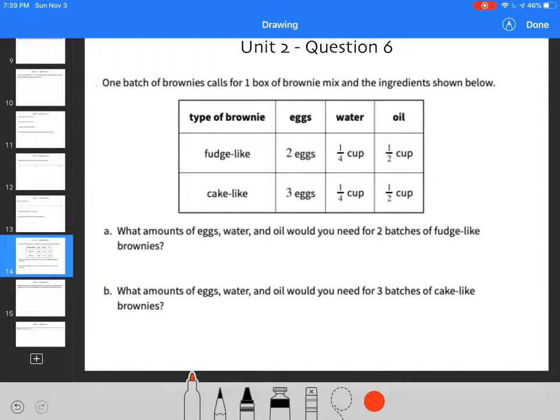One batch of brownies calls for one box of brownie mix and the ingredients shown below. What amounts of eggs, water, and oil would you need for two batches of fudge-like brownies?